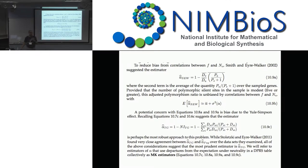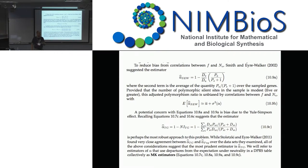The Yule-Simpson effect — the classic case was a lawsuit brought against Berkeley. They noticed women had a higher rejection rate than men, statistically significantly different, and so a lawsuit was filed. But when they drilled down, women actually had higher acceptance rates than men. Men were applying to programs with higher acceptance rates overall. Women were applying to some of the most difficult programs. The individual values were different from the amalgamated values — that broadly is called the Yule-Simpson effect, one way to understand why individual signals may differ from amalgamated signals.